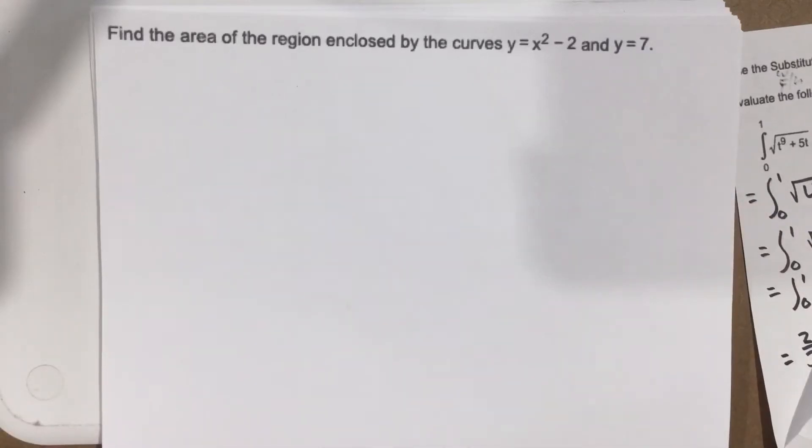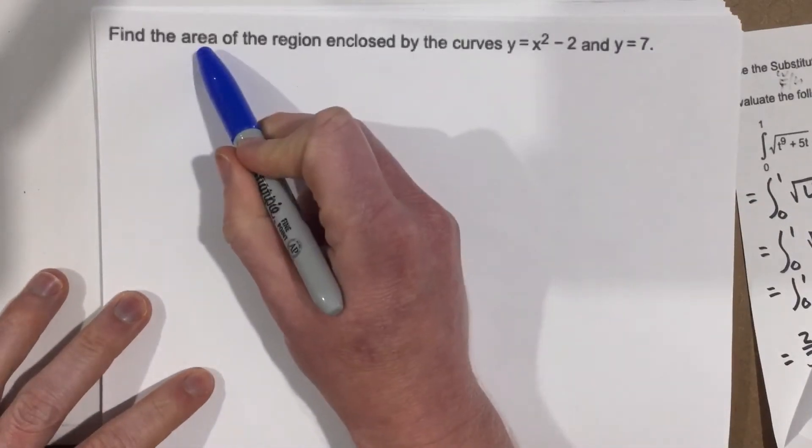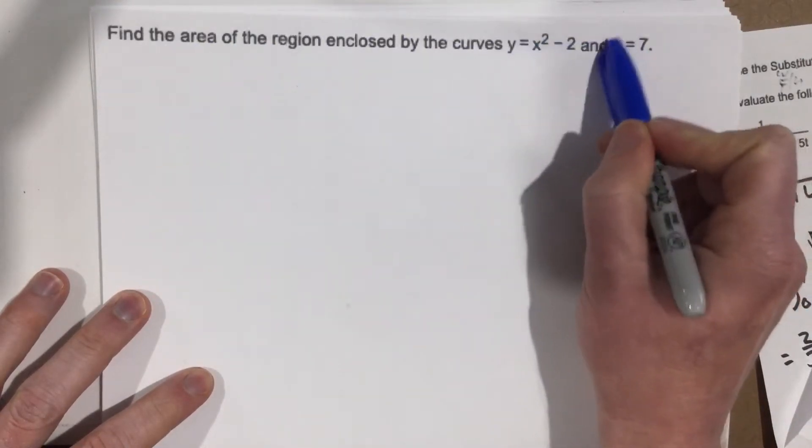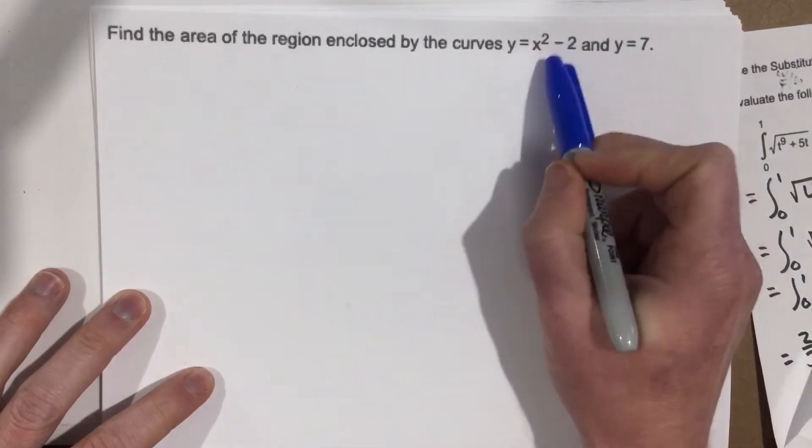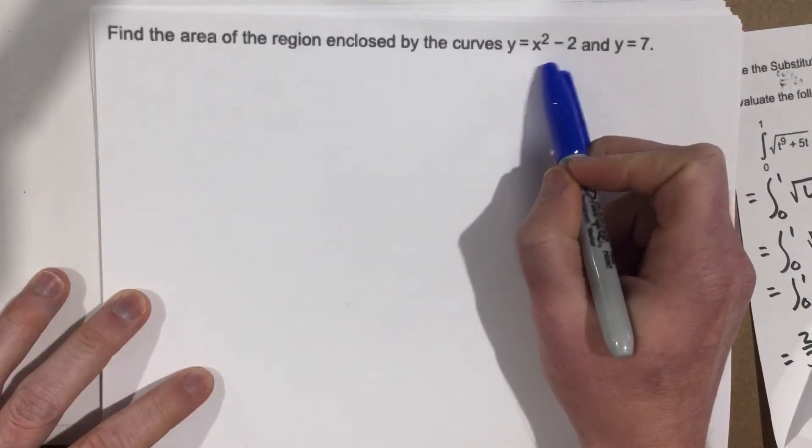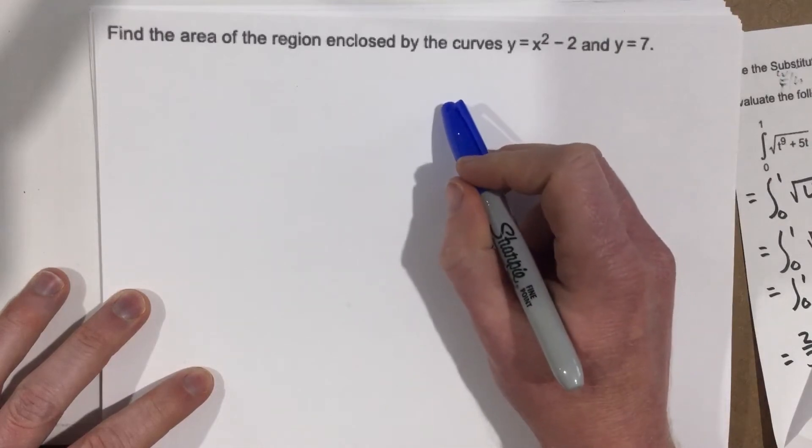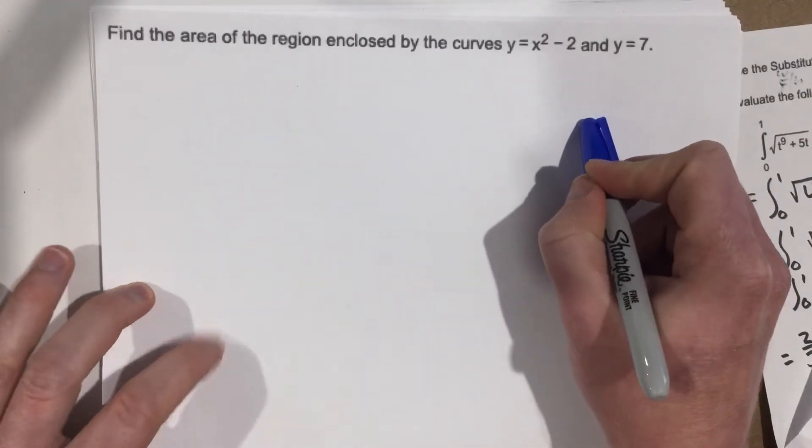So this is another problem where they're not having us find the area from the x-axis to the function. They're having us find the area between two functions. And not only that, they're not giving us the x values that we're going to integrate over. It's not telling us integrate from x equals 2 to 4. They're wanting us to figure this out.